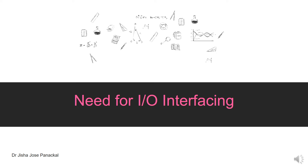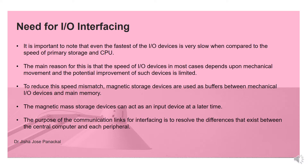Now we will see what is the need for IO interfacing. It is important to note that even the fastest of IO devices is very slow when compared to the speed of primary storage and CPU. The CPU and primary memory speed is faster than the IO devices speed. The main reason is that the speed of IO devices in most cases depends upon mechanical movement, and the potential improvement of such devices is limited. To reduce the speed mismatch, magnetic storage devices are used as buffers between mechanical IO devices and main memory.